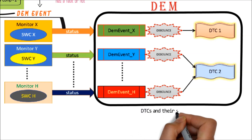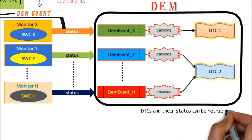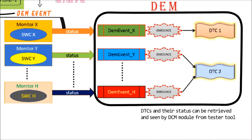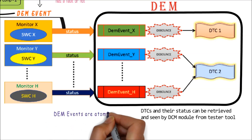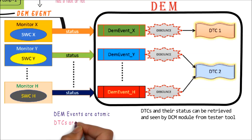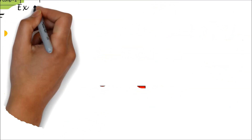These DTCs and their statuses can be retrieved and seen by the DCM module from a tester tool. It is possible that a single DEM event can be mapped to a DTC, or multiple DEM events can be mapped to a single DTC. A DEM event must represent an atomic event, while a DTC is meant to let the technician know which feature has failed — it is not atomic.